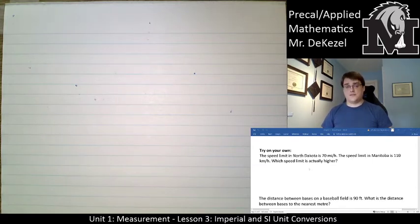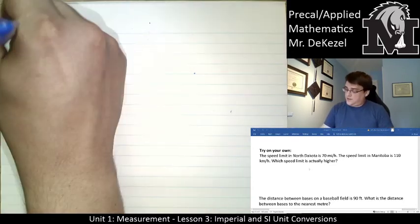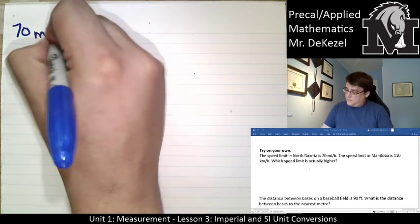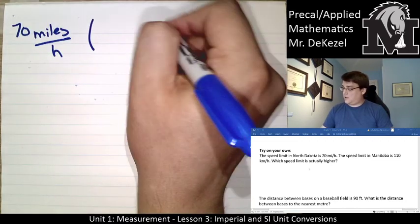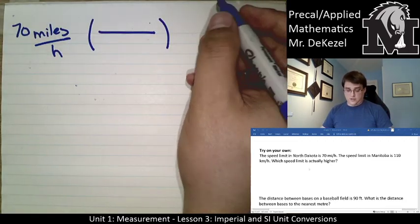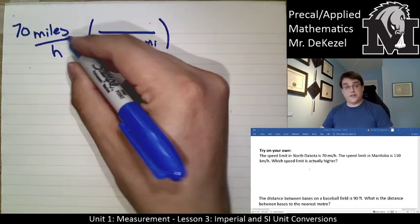The speed limit in North Dakota is 70 miles per hour. The speed limit in Manitoba is 110 kilometers per hour. Which speed limit is actually higher? We need to take one of them and convert it into the other so they are the same and we can compare them. Let's take the 70 miles per hour and convert that into kilometers per hour.